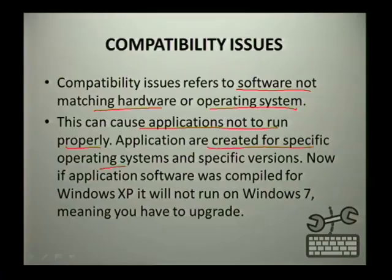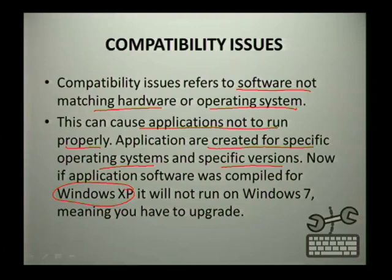Applications are actually created for specific operating systems and specific versions of those operating systems. For example, if application software was compiled for Windows XP, it means it will not run properly on Windows 7, which means you need to upgrade the software.